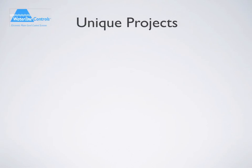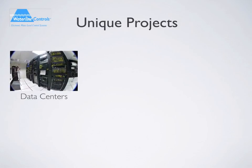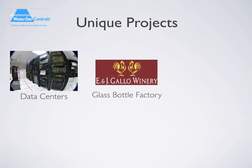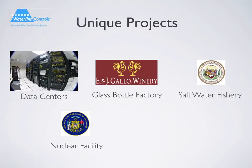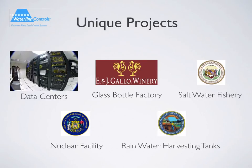Here are a few unique projects we've done over the last five years to give you some idea of its versatility. All the data centers for Microsoft, Apple, Google, Dell, and Facebook. A Gala Wine Bottle Production Factory with two different bottle production lines. A saltwater fishery in Hawaii, where conductivity technology would not survive due to the saltwater. A nuclear facility in Wisconsin that contained eight separate water silos. And rainwater harvesting tanks for two high-rise residential buildings in Minneapolis.